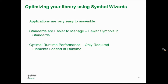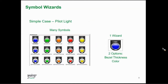Symbol Wizards — I won't give a huge demo, but it's very powerful technology. It allows us to have fewer symbols and helps enforce standards with lower overhead since it only loads what it needs at runtime. In our Orchestral Graphic library, looking at black and chrome pilot lights, you can see about 15 different pilot lights. The differences are really just two things: bezel thickness and color. So why did we need 15 different symbols? At the time, when the original library was created, we didn't have this symbol wizard technology.